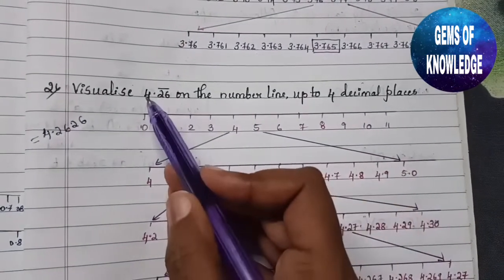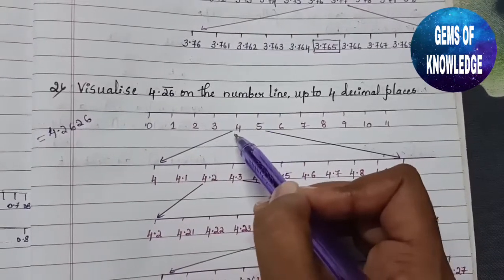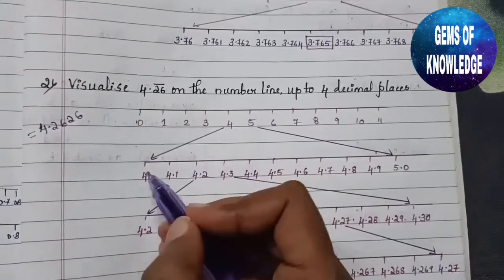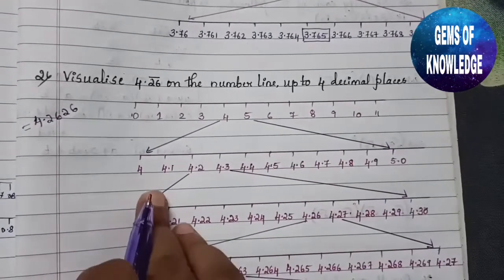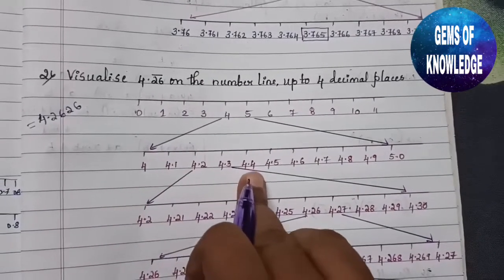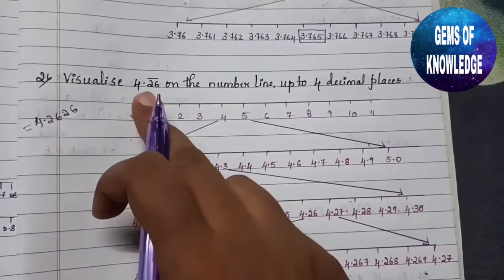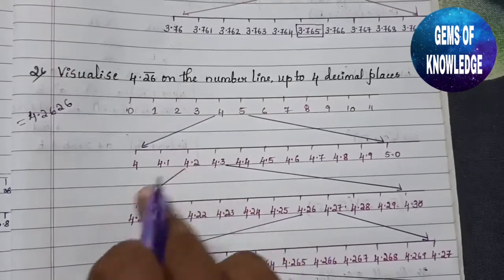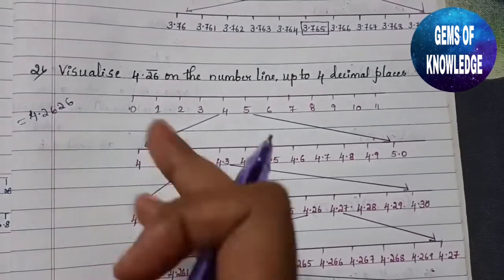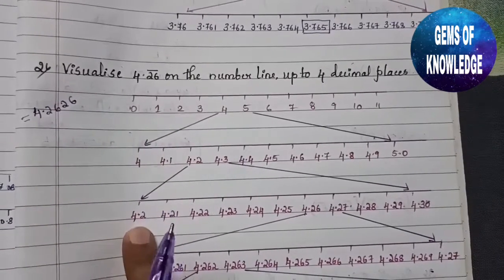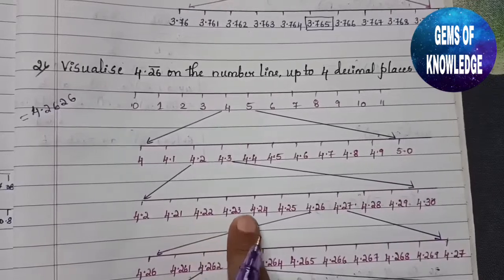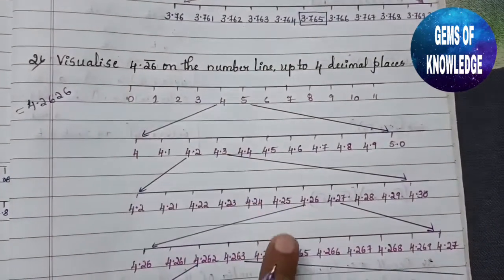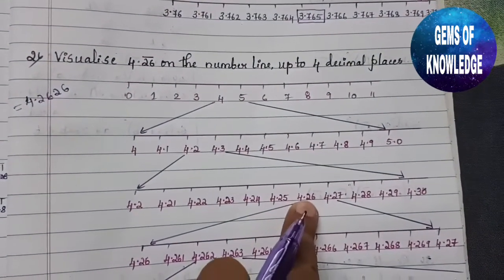We need the number 4, so we take 4 and the next number 5, and enlarge this part. In between 4 and 5 we get 4.1, 4.2, 4.3, 4.4, and so on up to 4.9. Next we take 4.2 and 4.3 and enlarge again. Between them we get 4.20, 4.21, 4.22, 4.23, 4.24, 4.25, 4.26, 4.27, 4.28, 4.29, and 4.30. We need 4.26 here.